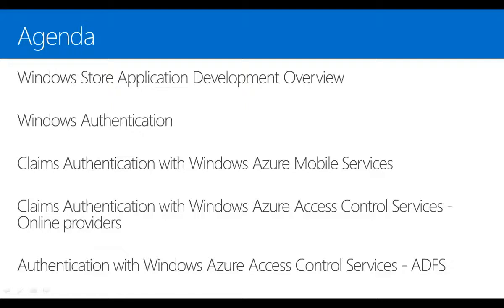The first way is using Windows Azure Mobile Services. Although it is in beta right now, it demonstrates how seamlessly Windows Store Apps can be integrated with online providers like Microsoft, Yahoo, and Facebook. The second way is to use Windows Azure Access Control Services. The third way is to use Access Control Services integrating with Active Directory. We'll talk about all three mechanisms and how to implement authentication in your application.